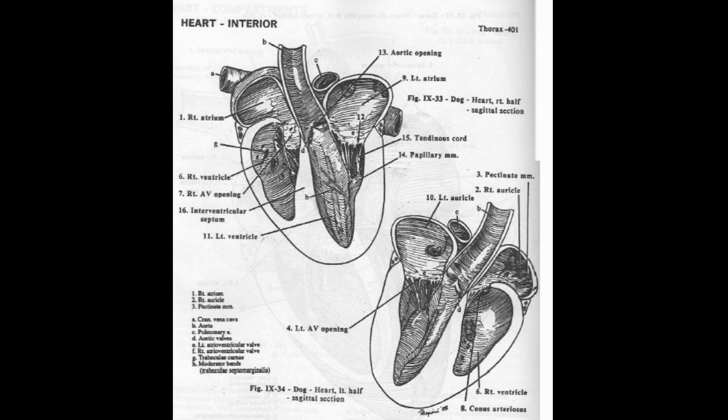The right atrioventricular valve is also known as the tricuspid valve because it contains three cusps. The cusps are the septal cusp — which is next to the interventricular septum — the angular cusp, and the parietal cusp. These fibrous cusps guard the opening between the atrium and ventricle, preventing backflow of blood from the right ventricle into the atrium during contraction.